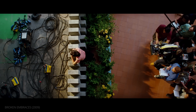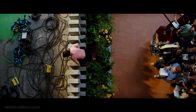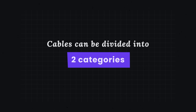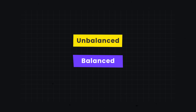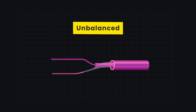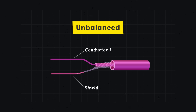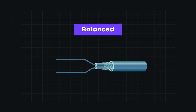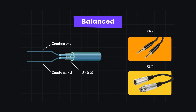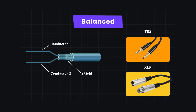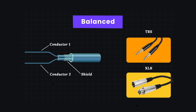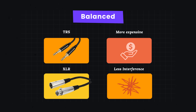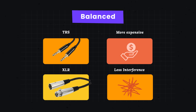Noise can be minimized through a mixer's choice in cables. Cables can be divided into two categories: unbalanced and balanced. Unbalanced cables have two wires and can acquire more noise interference, making them less ideal for long distances. For this reason, balanced cables like XLRs or TRSs are more often used on film sets. Though they are usually more expensive, they minimize unwanted noise.